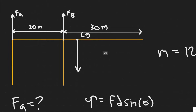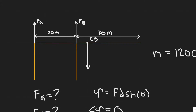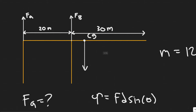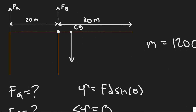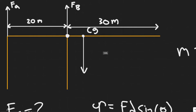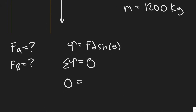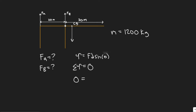We imagine the structure rotating around the point where Fb is applied. A force at one location will rotate it one way, and a force at another will rotate it down. So we're summing the torque about that point, and there are three forces whose torques we need to find relative to that point.